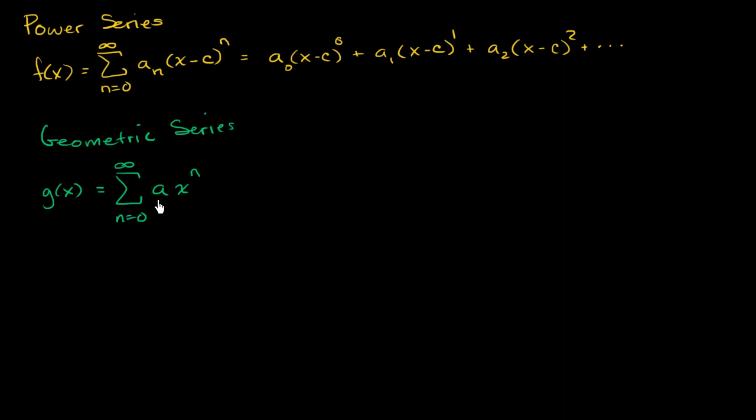And what's the difference between this and this? Well, the difference is here for every term we're going to have the same coefficient a, while over here we have a sub n. We're multiplying by a different thing every time up here. And in this case, this particular geometric series I just made, instead of having x minus c to the n, we have just x to the n. So you could say, well, this is a special case when c is equal to 0.